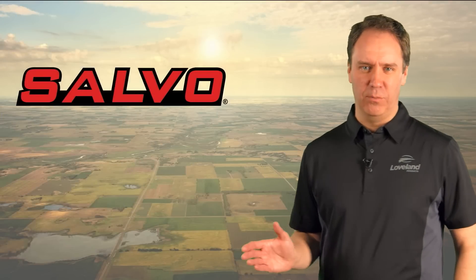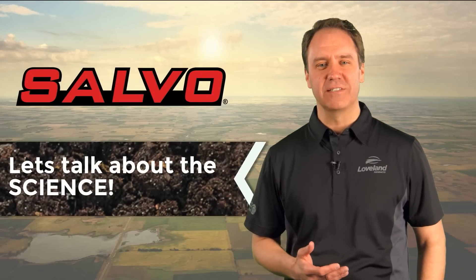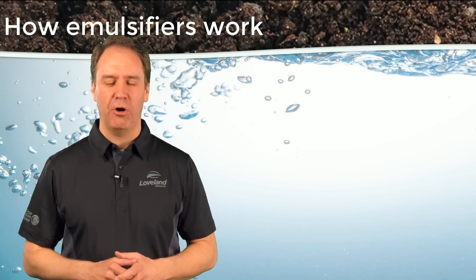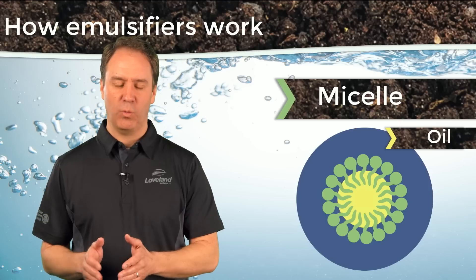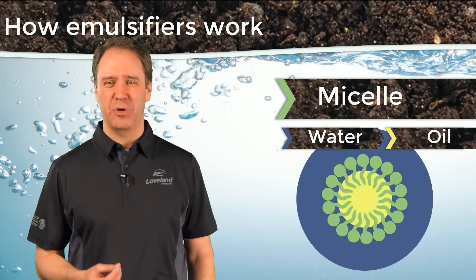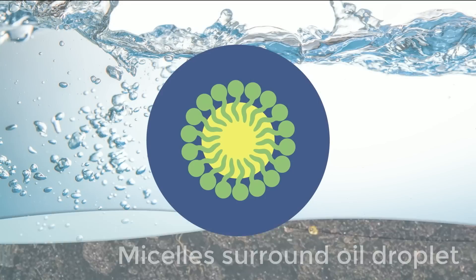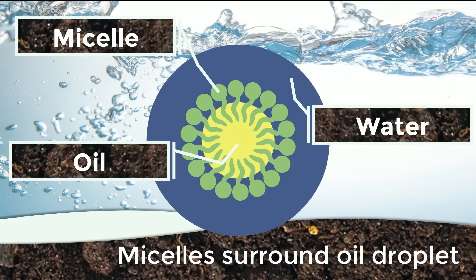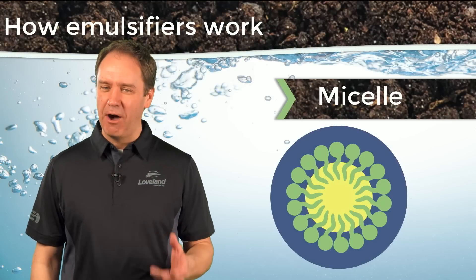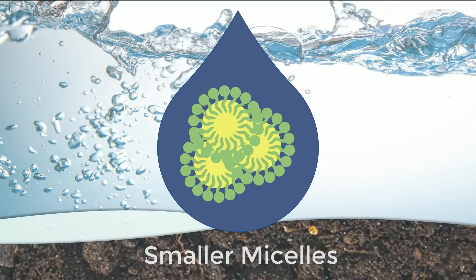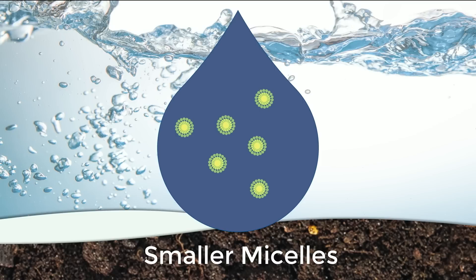Now that you've seen how Salvo provides a more uniform, reliable solution, let's talk about the science behind this unique formulation from Loveland Products. What makes emulsifiers work is a cluster of molecules called micelles. One half of a micelle is oil-soluble while the other half is water-soluble. This unique structure makes micelles the perfect bridge to help 2,4-D esters, which are oils, stay in solution with water. In this diagram, we see how the micelles are able to surround an oil droplet of 2,4-D and bring it into solution with water.